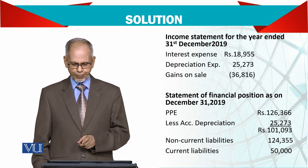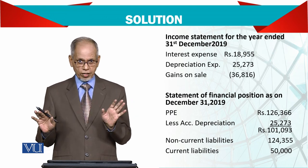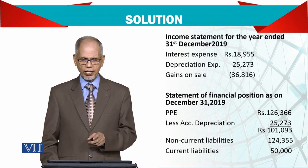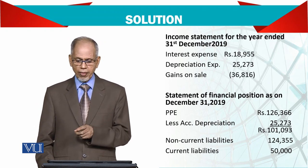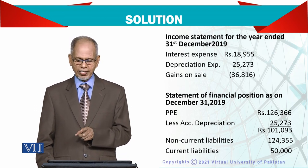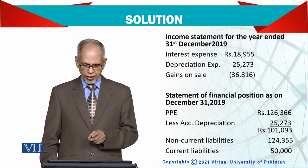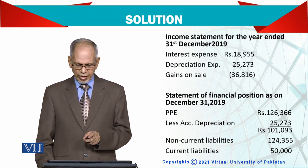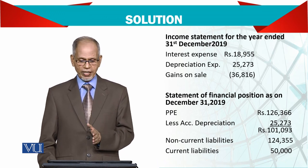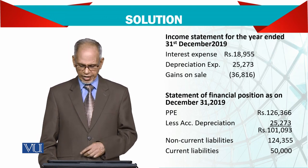For the balance sheet: the original property, plant and equipment that was sold is now gone and not reported. The new right of use asset of 126,366 is shown less accumulated depreciation divided over the lease term. Non-current liabilities show the long-term portion and current liabilities show 50,000 — the payment due in the coming year.